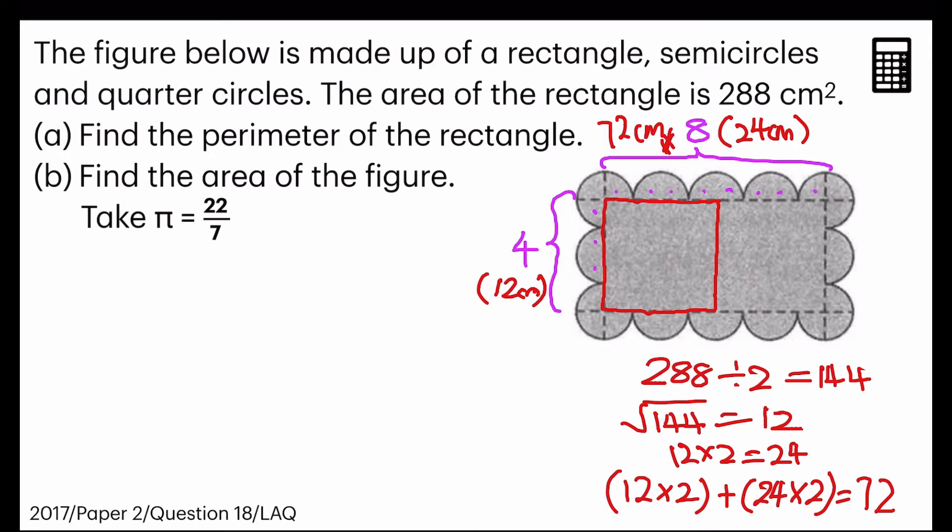Now B, find the area of the figure. We already know that the rectangle is 288. So now our only problem is to find the circles or rather the quarter circles that we have here. How many quarter circles do we have? Let's give it a count.